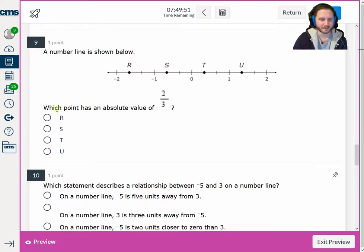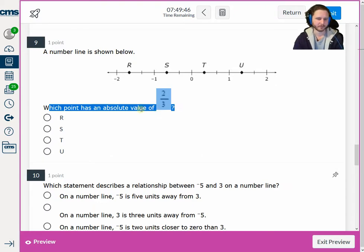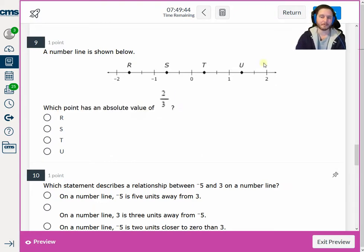For number 9, which point has an absolute value of two-thirds? So we either have a positive or a negative here. It's not T, though. Because if I count here, zero, one-third, two-thirds, there is nothing at positive two-thirds. So I have to look at the negatives. Zero, negative one-third, negative two-thirds. The absolute value of negative two-thirds would be two-thirds. So for number 9, we get S.